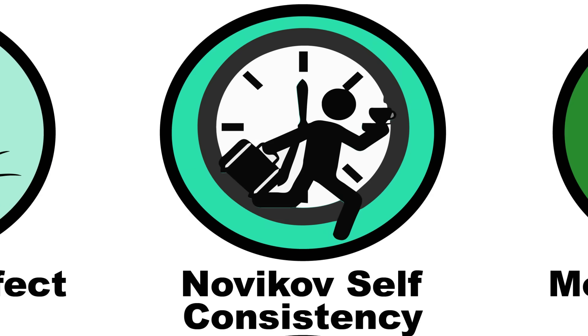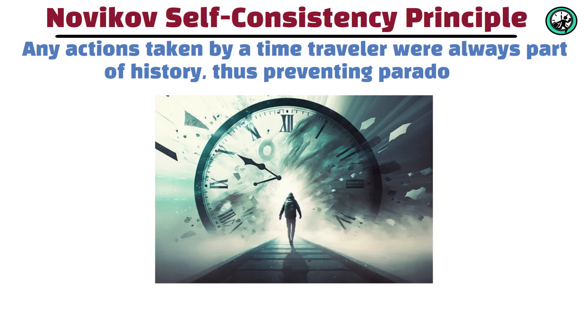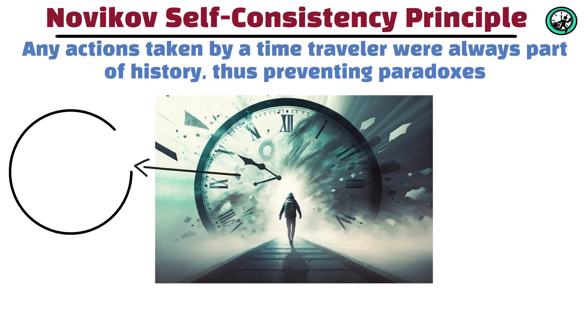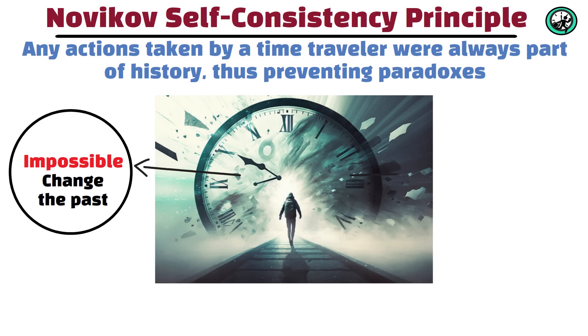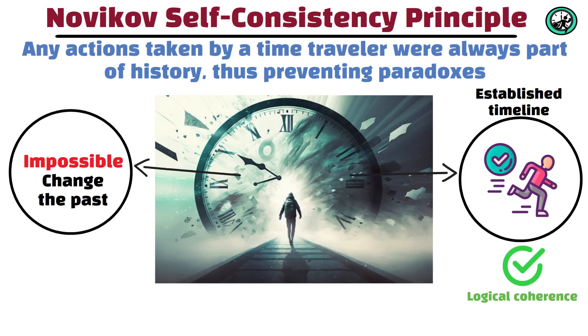Novikov's Self-Consistency Principle suggests that any actions taken by a time traveler were always part of history, thus preventing paradoxes. According to this principle, it's impossible for time travelers to change the past in a way that would create a paradox. Instead, their actions would always be consistent with the established timeline, ensuring logical coherence.